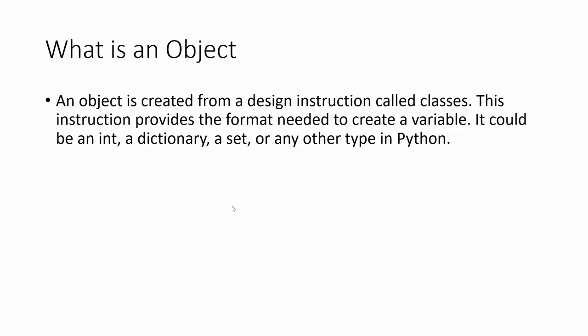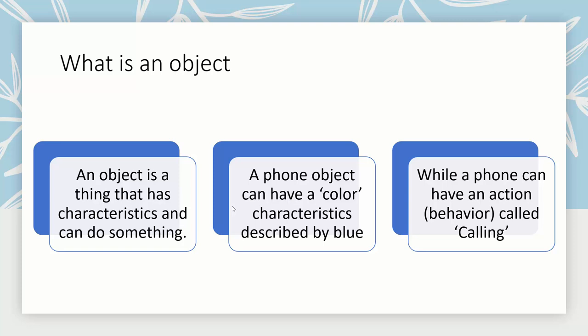You cannot have an object without a class and you cannot have a class without an object. An object is created from a design instruction called classes. The instruction provides the format needed to create something like a variable. You could create an integer, a dictionary, or a set, or any type of data in Python based on the predefined class templates.